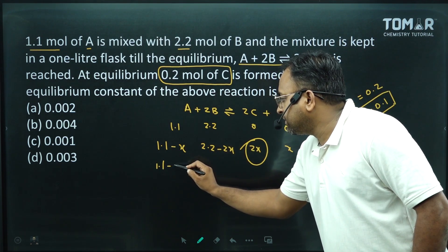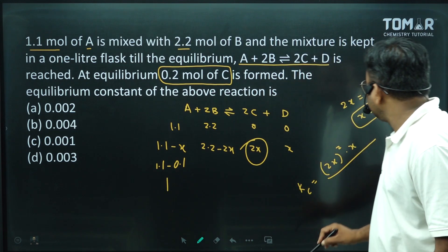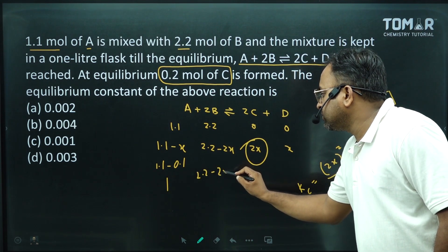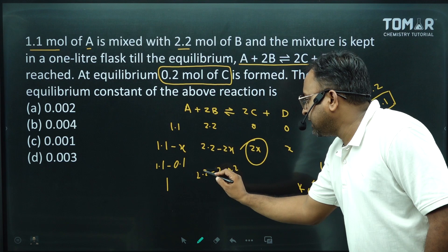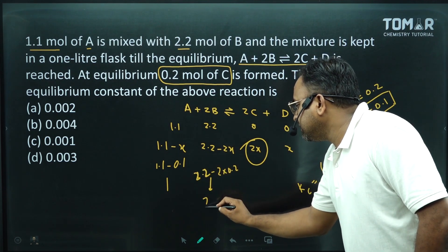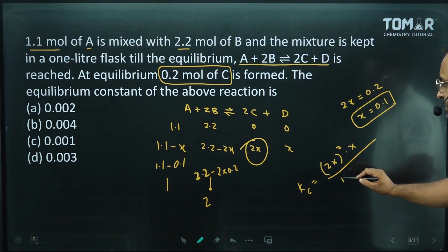1.1 minus 0.1, then this is 1. And 2.2 minus 2 into 0.2, then what will happen? This will become 2. So this will become 2.2.